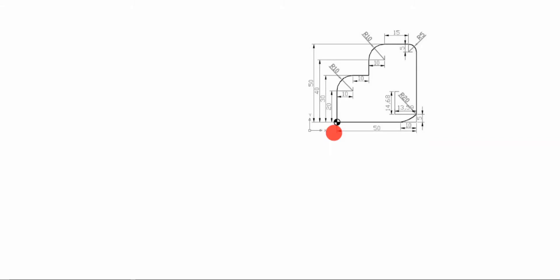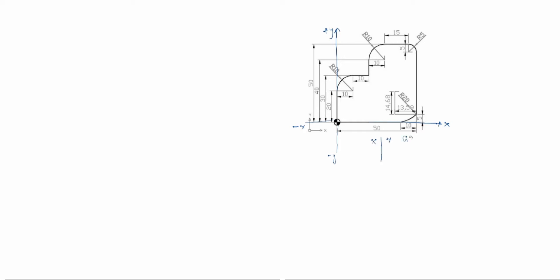Hi friends, welcome to my channel Excellent Ideas in Education. Today we are going to learn about CNC milling programming. Here in this drawing, the starting point is given, so we will start the program from here. First we have to draw the X and Y axes: plus X, plus Y, minus X, minus Y. We will write X and Y for G90. G90 is the absolute command — all dimensions are taken from the datum point.